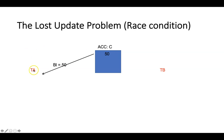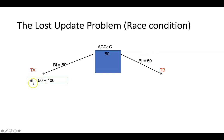Something happens like this: transaction A asks what is the balance, and it reads the balance at 50. At the same time, transaction B also reads the current balance as 50. Then both do their calculations and update the balance — one updates to 150, and the other updates to 250.